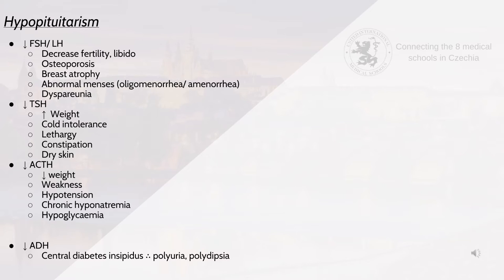A decrease in ACTH leads to decreased weight, weakness, hypertension, chronic hyponatremia and hypoglycemia. In the posterior pituitary, a decrease in ADH leads to central diabetes insipidus, and therefore polydipsia and polyuria.